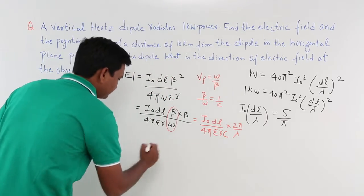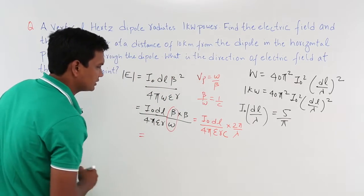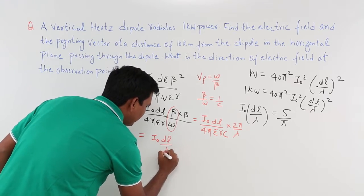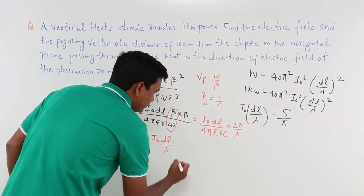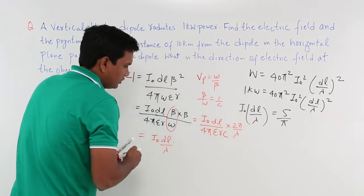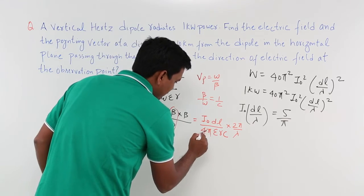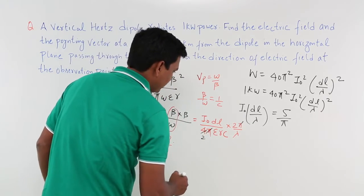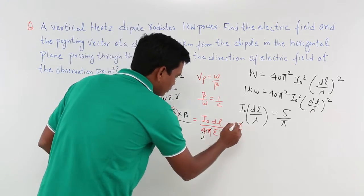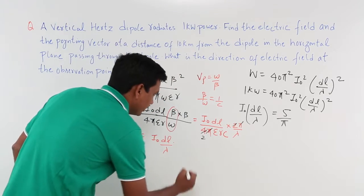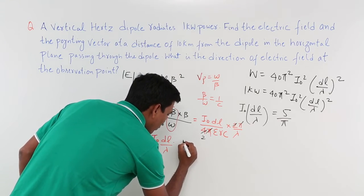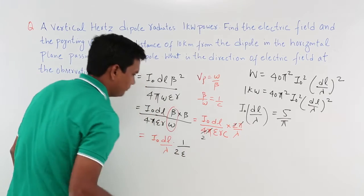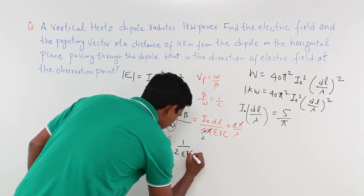What I will do is I will take I₀DL/λ all together and what is left is nothing but this π. If you observe this will become 2, this π will get cancelled. So this is nothing but on this 2 will also go. So this will be nothing but 1/(2ε₀rc).